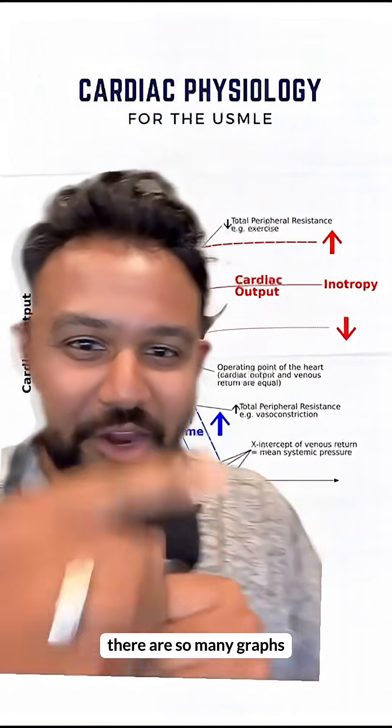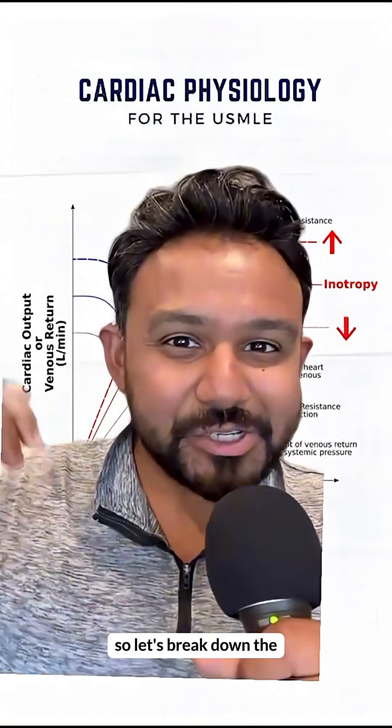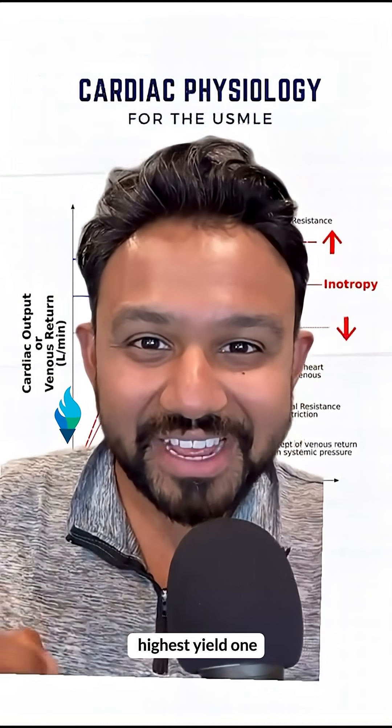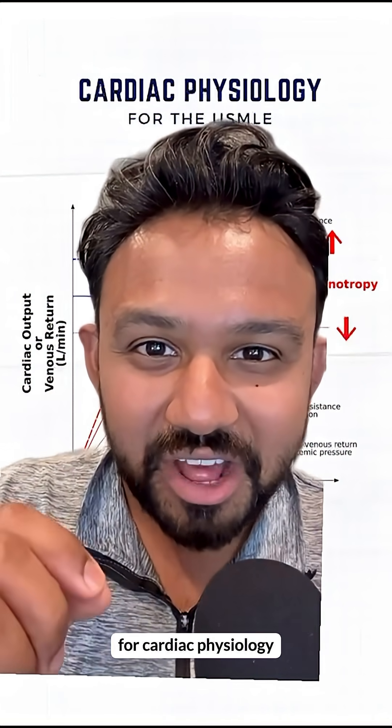Real talk, there are so many graphs like this on the USMLE. So let's break down the highest yield one you need to know for cardiac physiology.